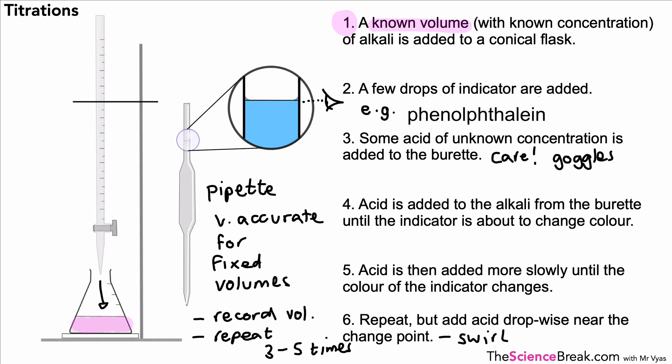That would be our accurate value for how much acid is needed to neutralize 25 centimeters cubed of a known concentration of alkali. So these are the steps for carrying out the titration. There are some titration calculations that we need to know, but those are dealt with in a separate video. Thanks for watching and I'll see you soon.